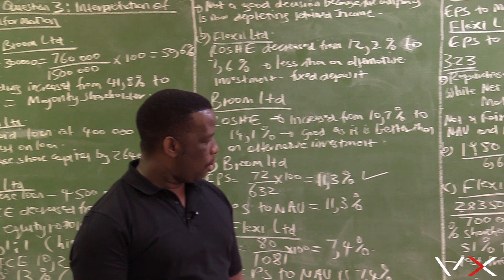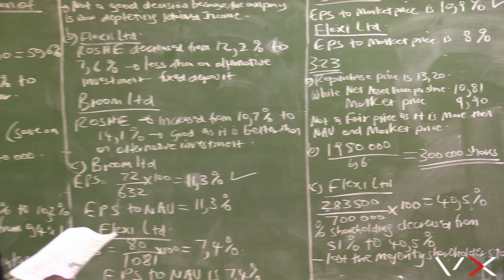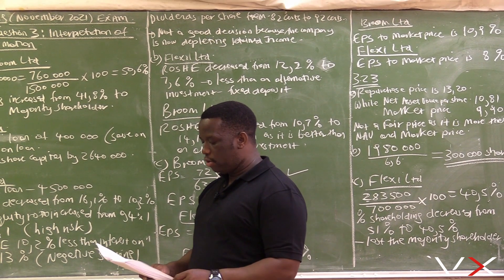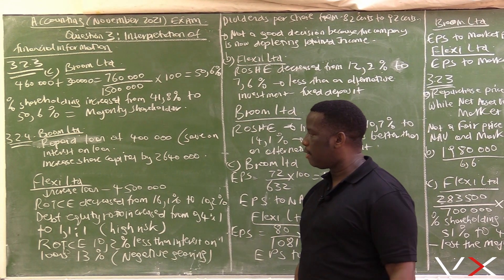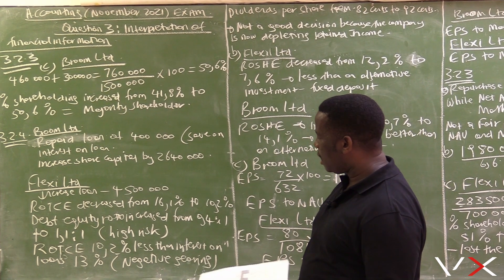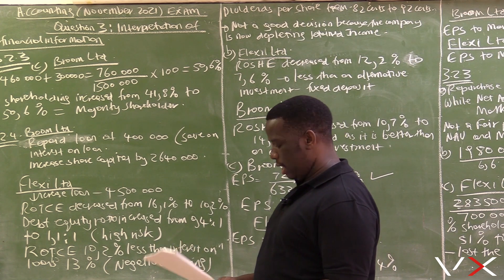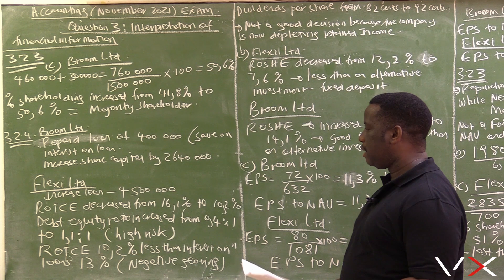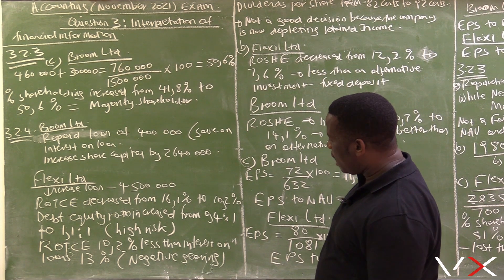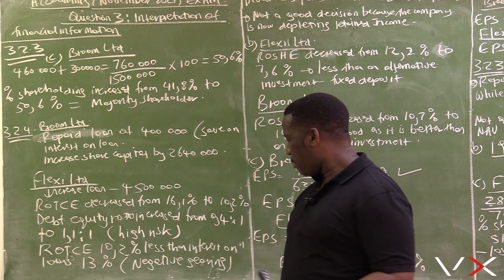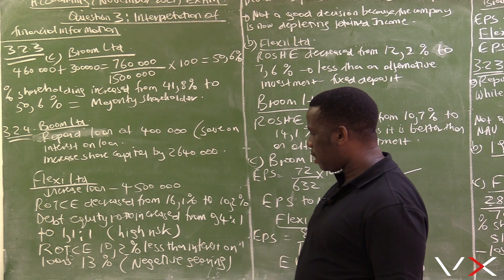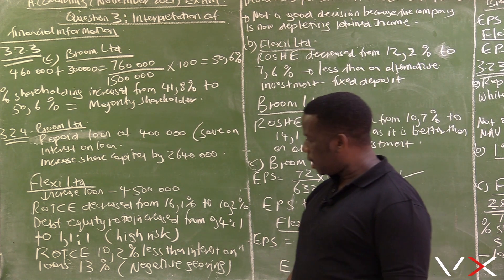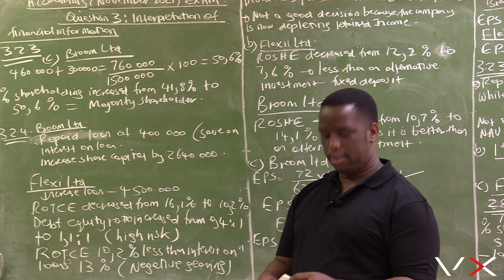Regarding percentage shareholding, a shareholder lost majority shareholder status in Flexi Ltd but increased from 41.8 percent to 50.6 percent in Broom Ltd. Broom Ltd repaid the loan of 400,000 to save on interest and increased share capital by 2 million 640,000. Flexi Ltd's decision to increase the loan by 4 million 500,000 was not a good decision — the debt equity ratio rose from 0.4:1 to 1.1:1, ROTC of 10.2 percent is less than the 13 percent interest rate, resulting in negative gearing.